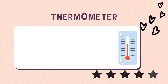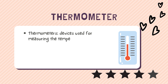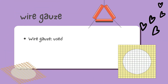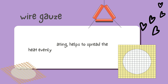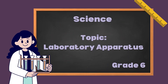Thermometer. A device used for measuring the temperature of a substance. Wire gauze. A wire gauze is used to support a beaker or flask when heating. The wire gauze helps to spread the heat evenly.